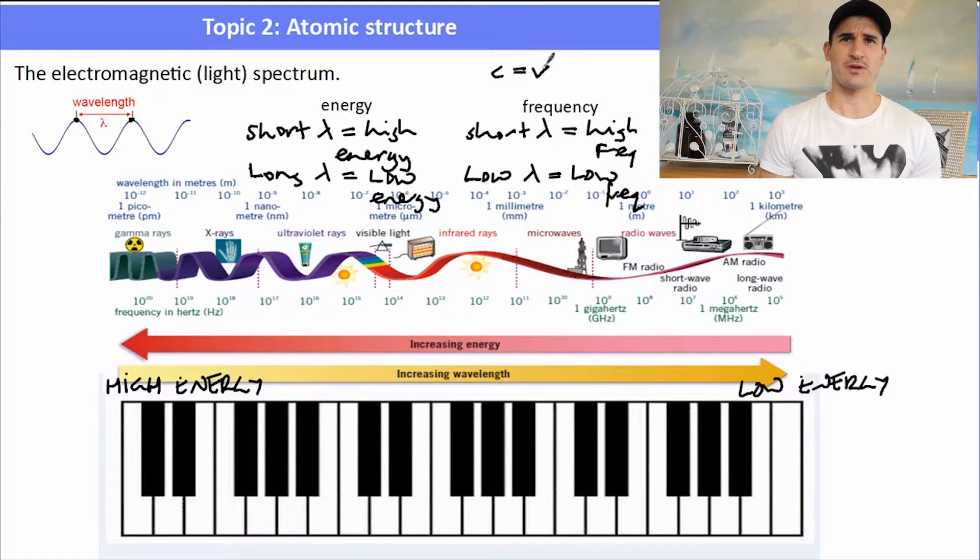We can also work out the frequency using a formula which is in the data book, where C is the speed of light and it's multiplied by the frequency, equals the frequency multiplied by the wavelength. So if you're given some of these values, you could work out the frequency, but I haven't seen that used as yet, but it is in the data book.